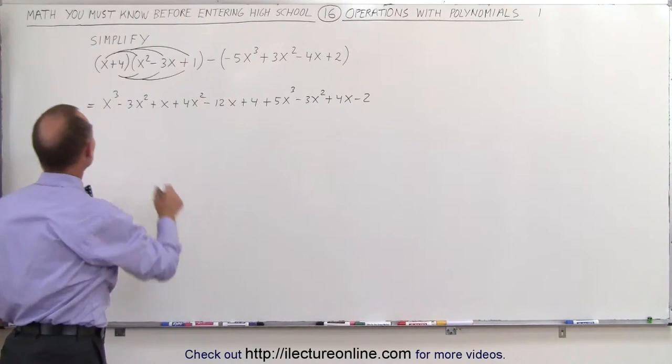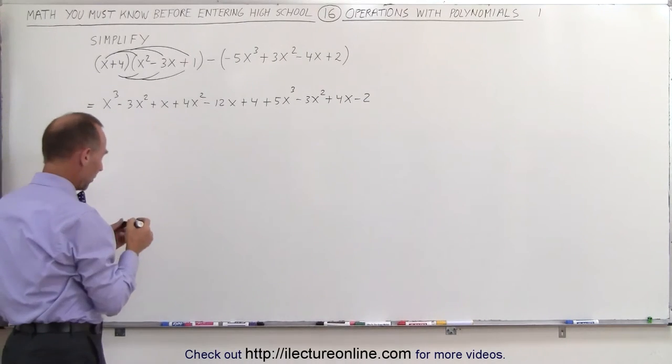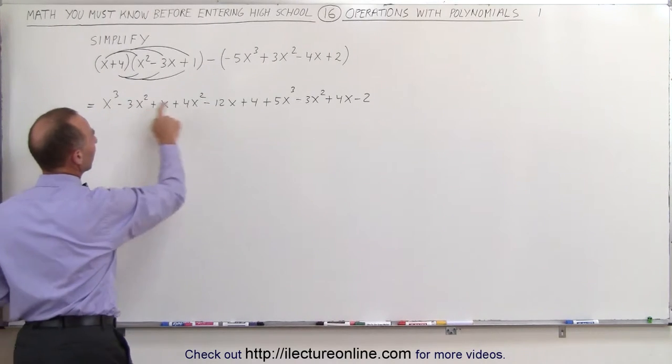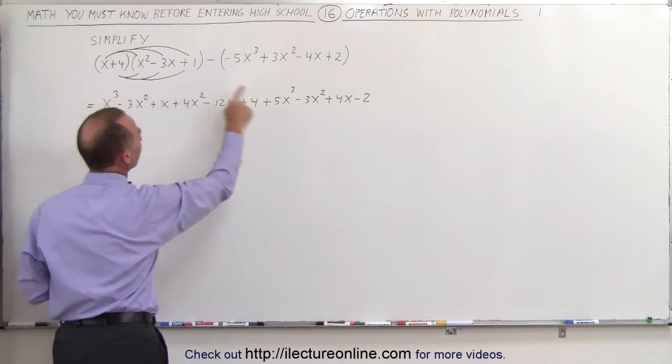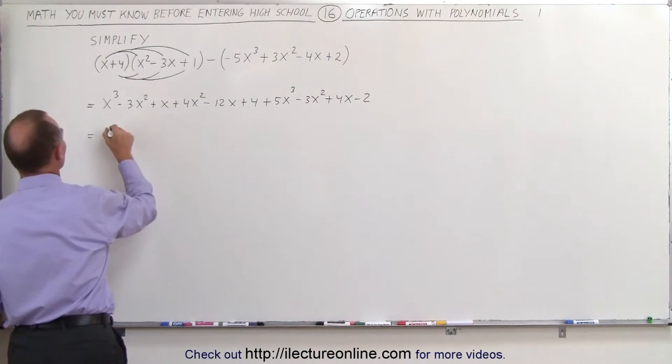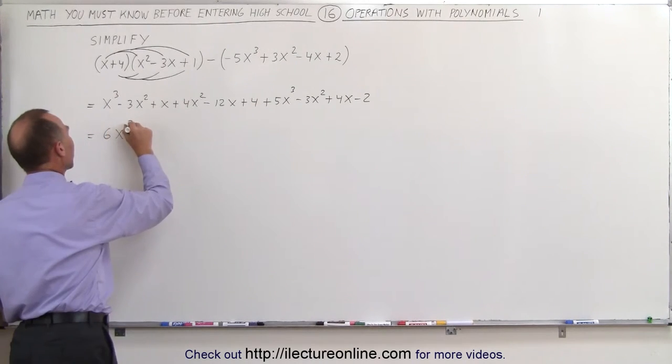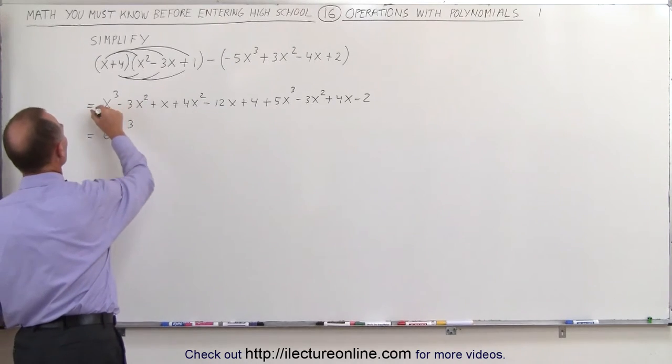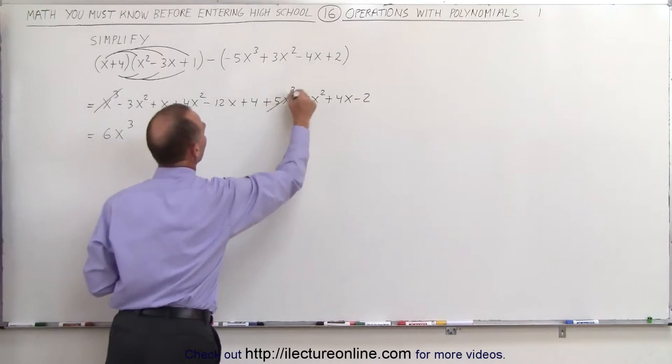The next step now is to go ahead and collect all the common terms. So we look for all the terms that have an x cubed in it. There's two, one here and one there, so 1x cubed plus 5x cubed is 6x cubed. Sometimes it helps to cross out the ones you already have taken account for. So if we cross out this one and cross out this one,